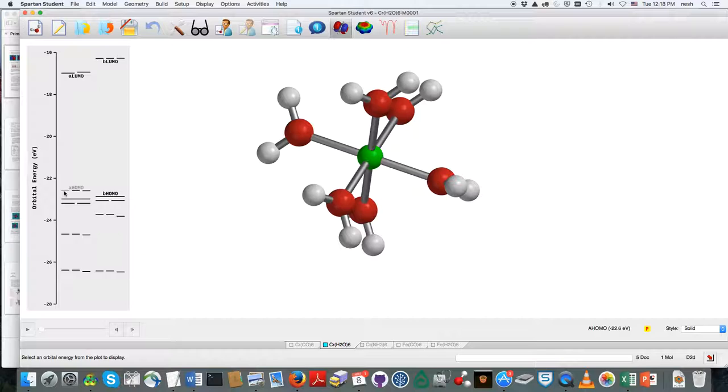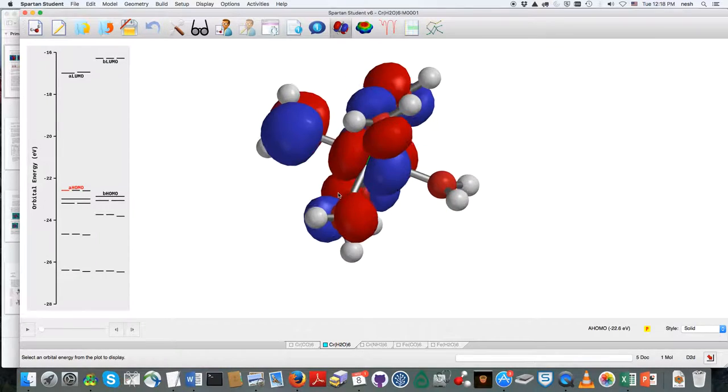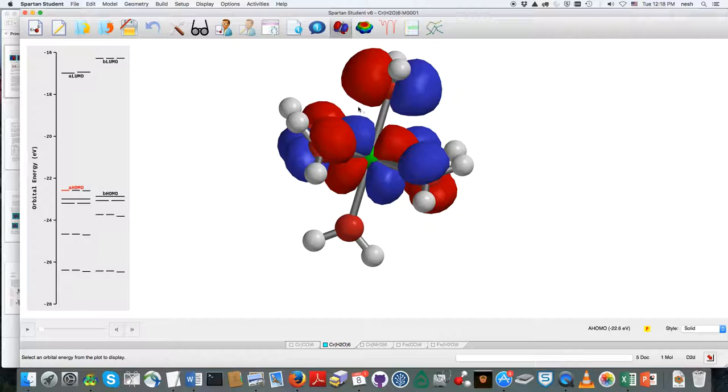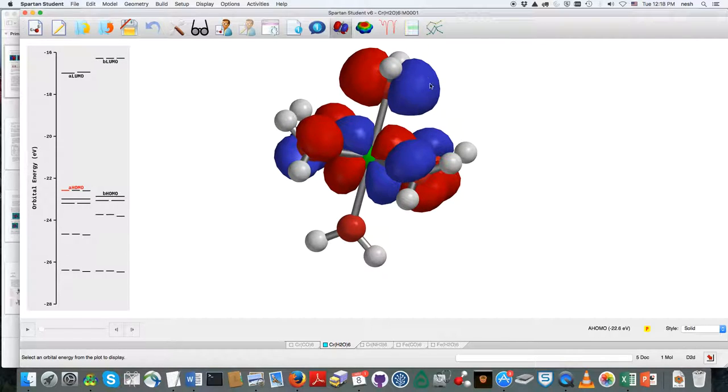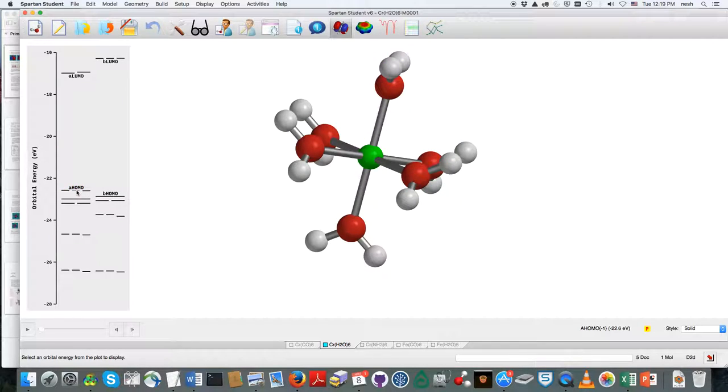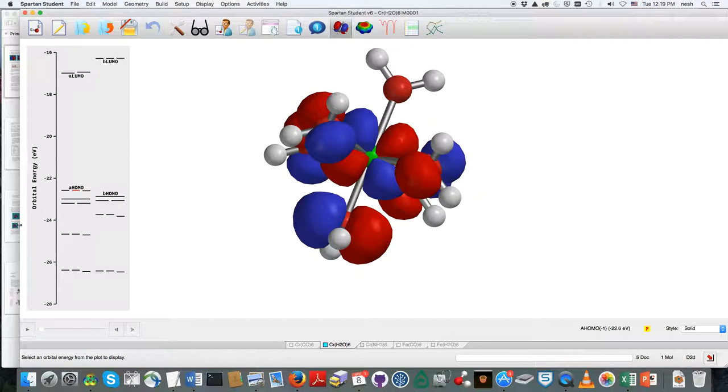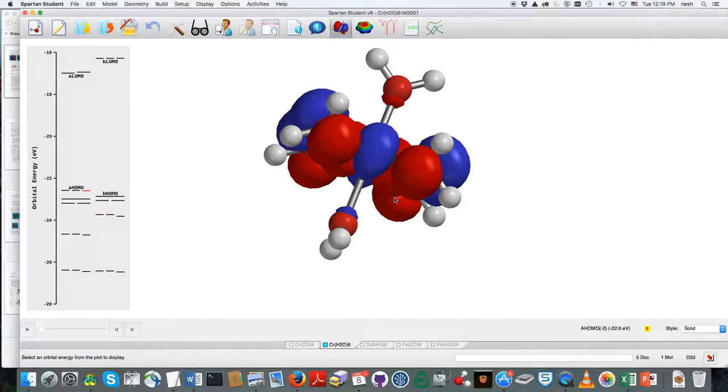But now if I drop down to these T2G guys there, now I can see this really significant antibonding interaction going on between that metal-centered d-orbital and, for example, that ligand right there. And since there's a color change, but it doesn't have symmetry about the internuclear axis, that must be pi star. And if you look at all three of these, you can identify pi star interactions all across the board.